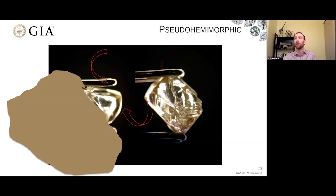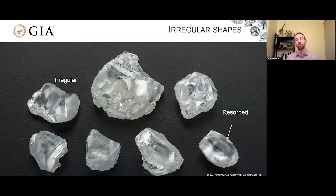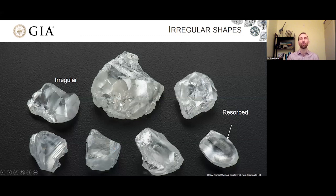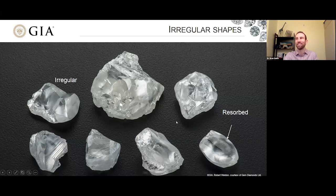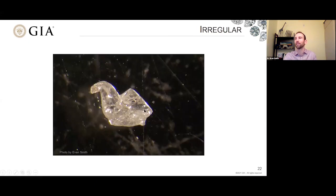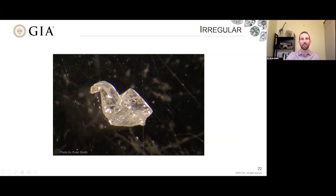Resorption can sometimes be extreme and get rid of most of the regular crystal structure we might otherwise expect. Sometimes we see crystals that appear kind of irregular in shape because they've been so extensively resorbed. Irregular shapes can also result from some combination of diamond breakage as well as resorption. Sometimes these irregular shapes result from the growth itself — here's a very peculiar diamond that is probably controlled by a number of factors during growth and post-growth processes, including resorption, that have made this diamond kind of resemble a swan.